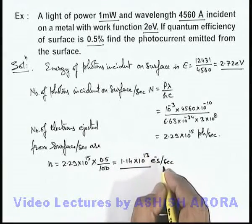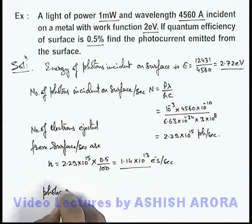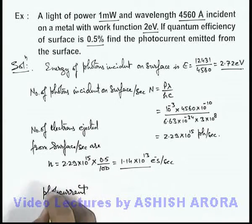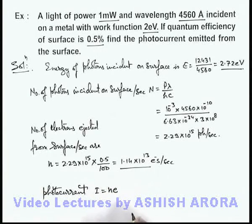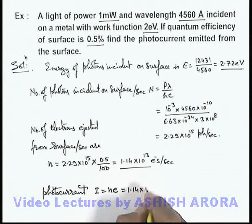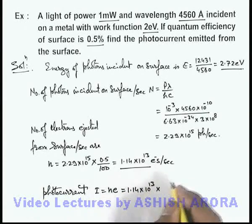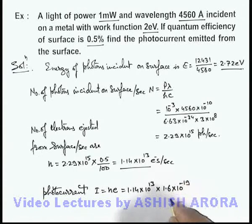If per unit time these much number of electrons are emitted, we can directly calculate the photocurrent as total charge emitted per second. So this current can be written as ne. If we substitute the values it is 1.14 into 10 to power 13 multiplied by the charge of an electron as 1.6 into 10 to power minus 19.